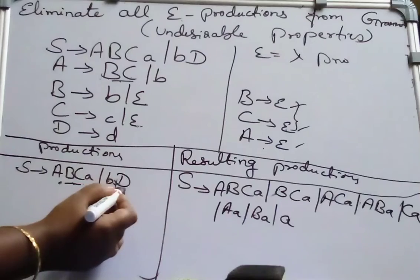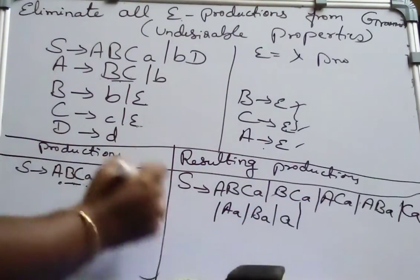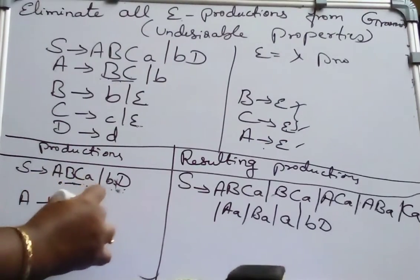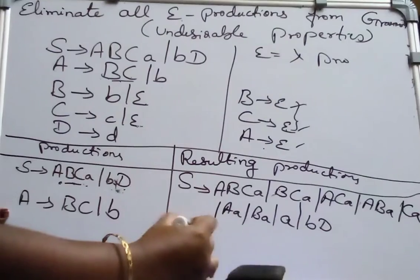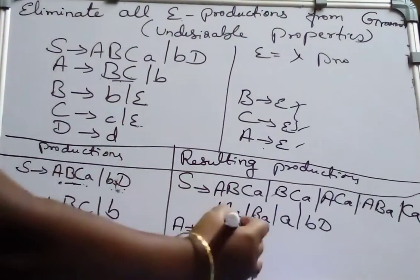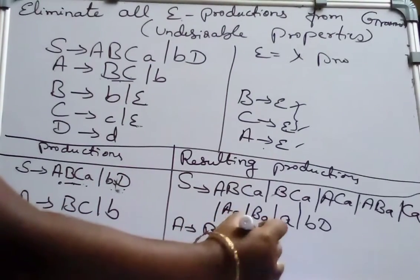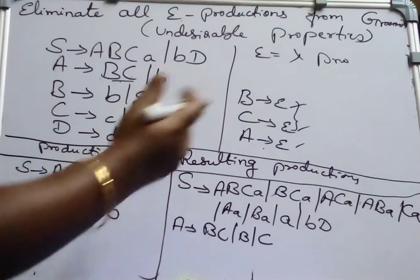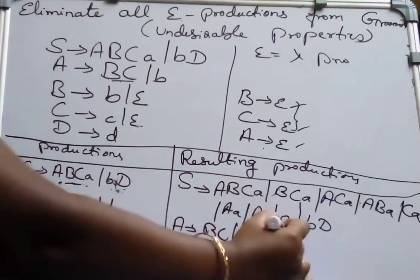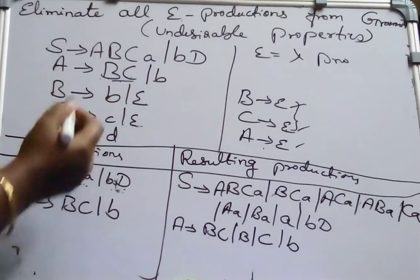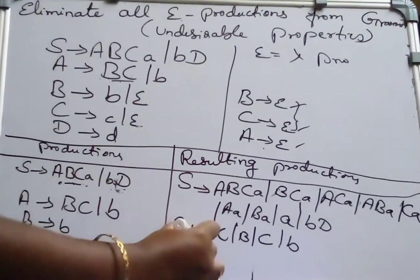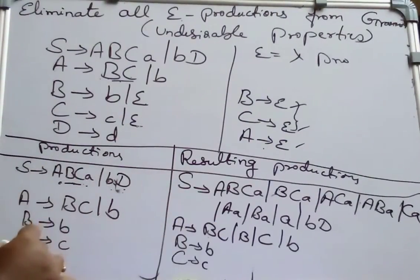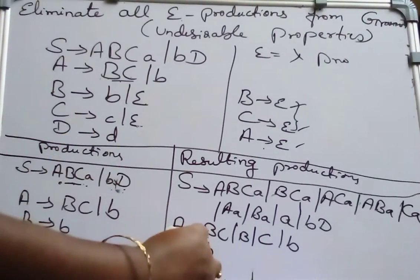The next production is S derives B, D. D doesn't have any epsilon productions, so write it as it is: S derives B, D. Similarly, take the next production: A derives B, C or B. Write it as it is — A derives B, C. If I substitute epsilon for C, I get only B. If I substitute epsilon for B, I get only C. If I substitute epsilon for both, I get epsilon, which we remove. Then the last production: A derives B — copy it as it is. Then B derives B, C derives C — remove the epsilon. D derives D — copy that, no epsilon.